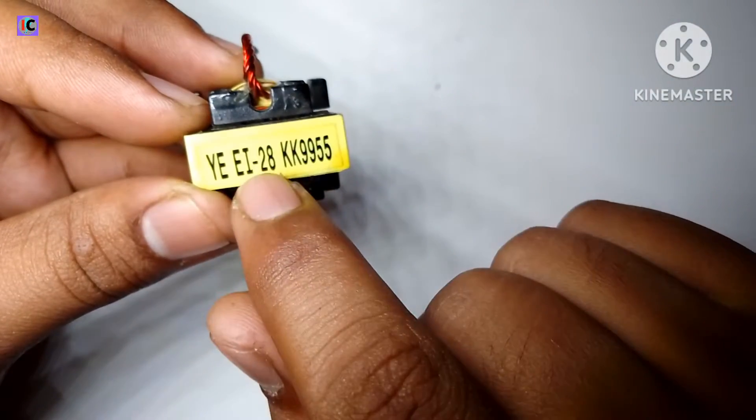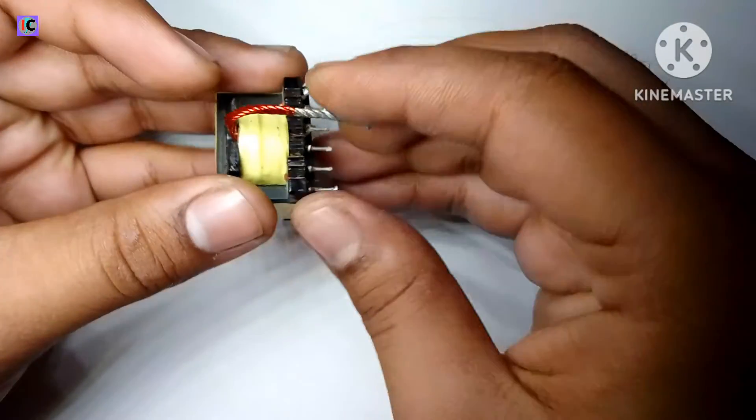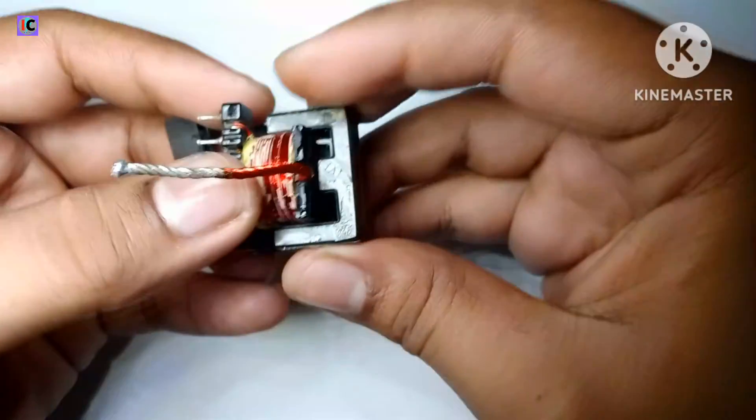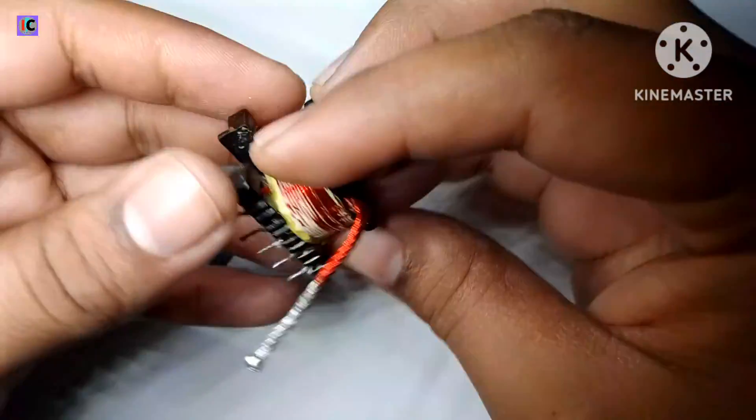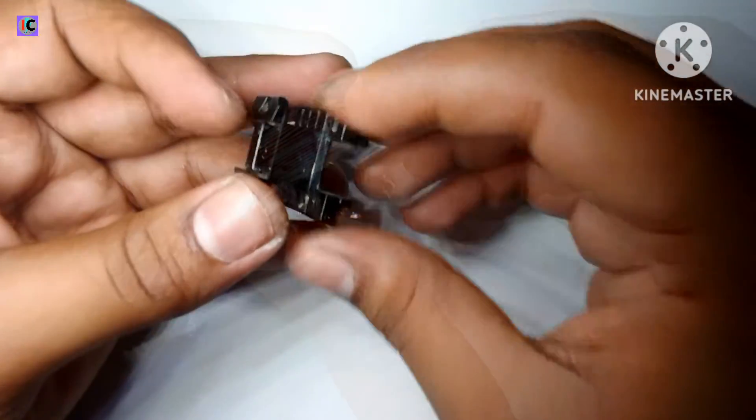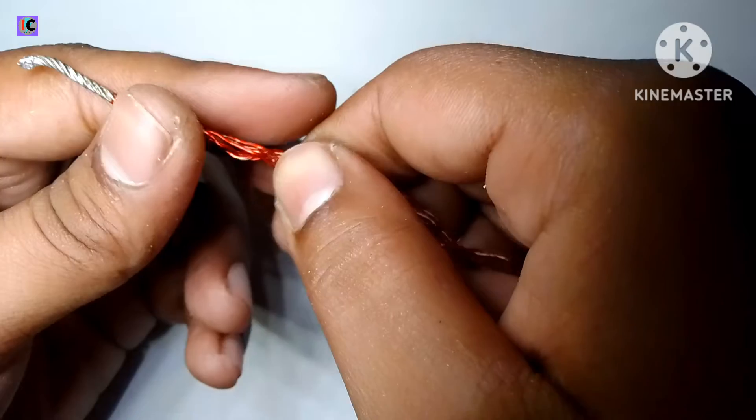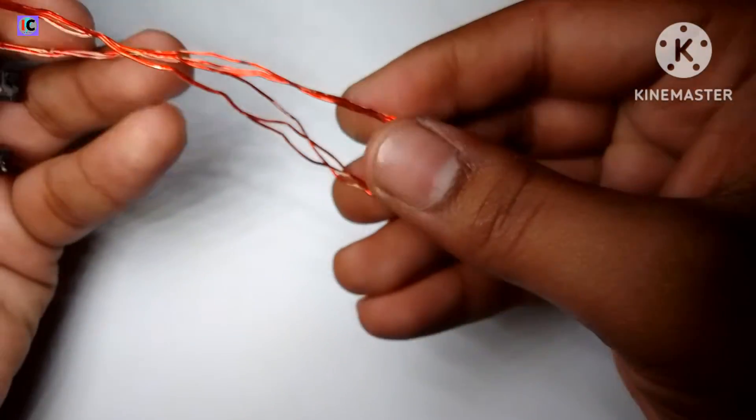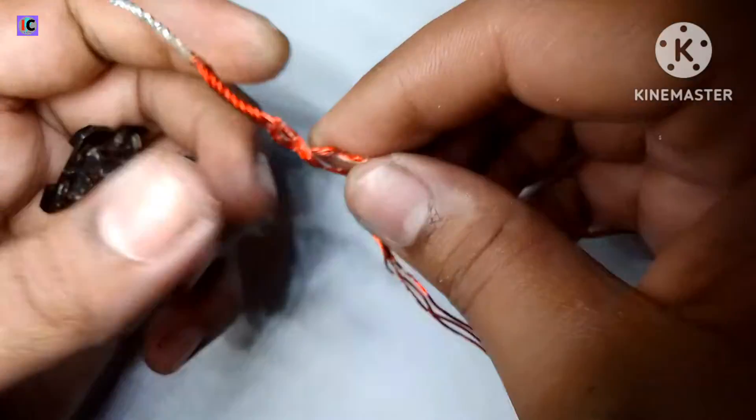This is an EI28F core transformer, and for the modification of 12 to 24 plus and minus 24 voltage, we have to modify the transformer. For this, we are making 303 turns of primary winding on the transformer.